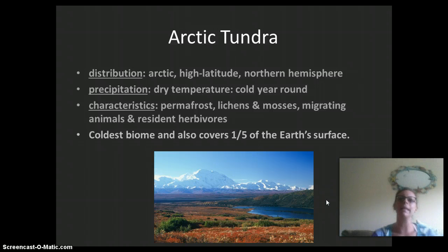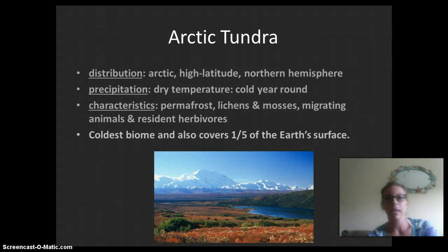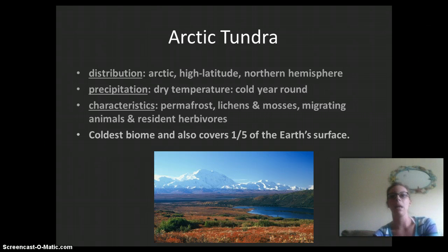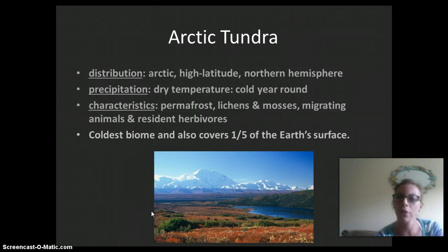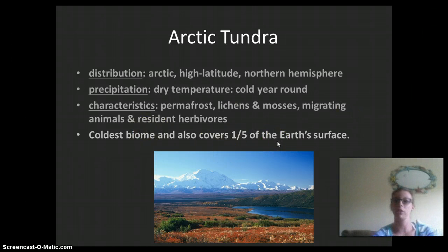The first biome is the arctic tundra, found in the arctic — high latitudes in the northern hemisphere. Precipitation is typically dry and temperature is cold year-round. Characteristics include permafrost, which is frozen soil, lichens, mosses, migrating animals, and resident herbivores. Think of northern Canada and Russia when you think about the arctic tundra. This is the coldest biome and covers about one-fifth of the earth's surface.